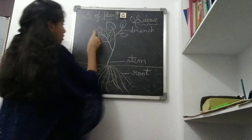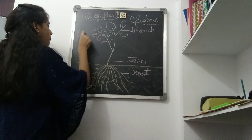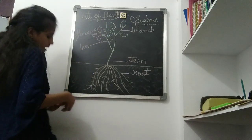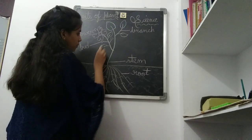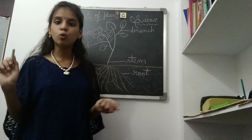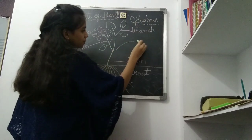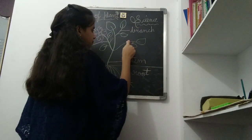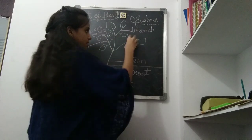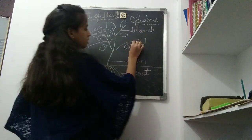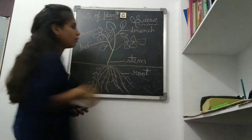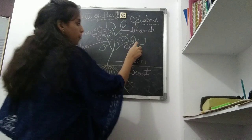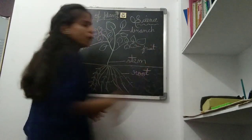Let us note it — Flower. Bud. And this will be the leaf — already you know that. And next is fruit. I am going to draw an apple. This is the fruit. Let me note that part also — Fruit.